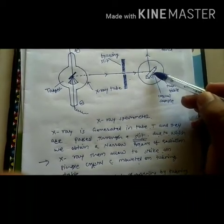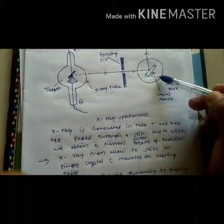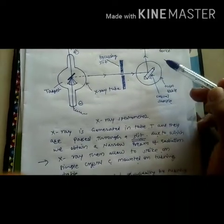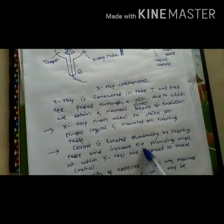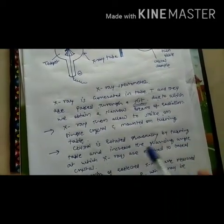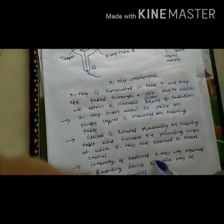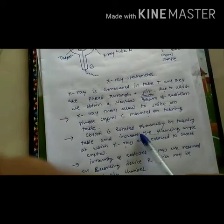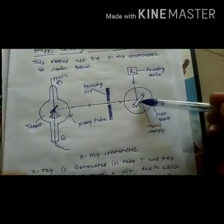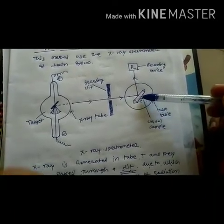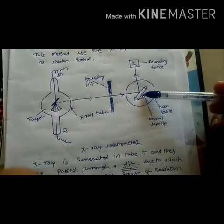This crystal is present on the turning table, which is moving, so the crystal is moving because of which the angle of rotation is continuously changing. The crystal is rotated gradually by the turning table to increase the glancing angle at which x-rays are exposed to each face of the crystal. Because of the rotation of this crystal, the angle of rotation is continuously changing for the different faces of the crystal as we are changing the face of the crystal.